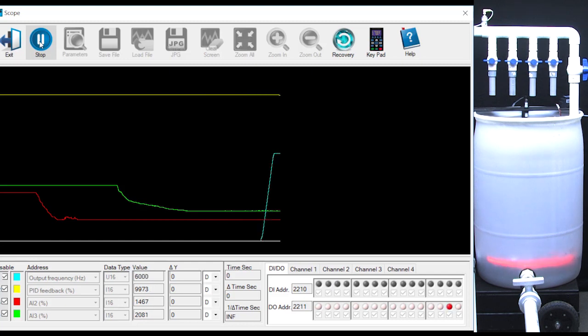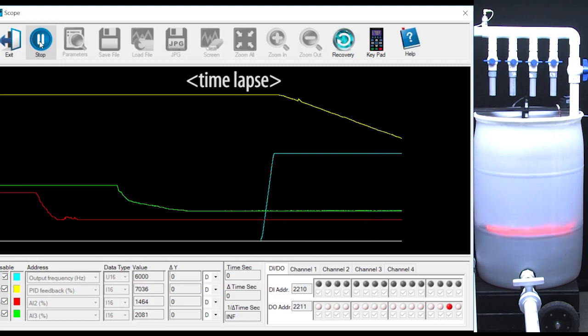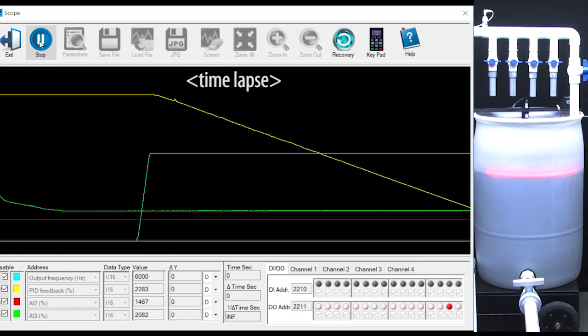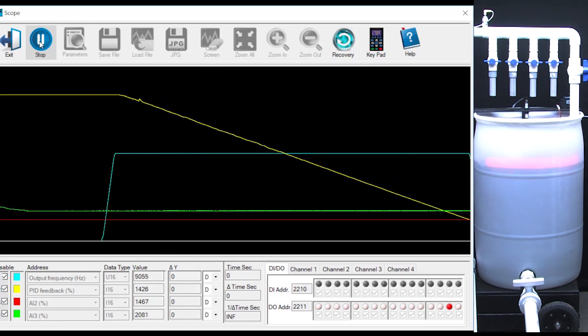PID sees the tank is empty and cranks up the blue drive frequency to try and fill the tank. We see the yellow sensor feedback falling. Remember it falls as the water level rises in a reverse acting system. And when sleep mode sees it cross the red sleep threshold we set, the motor turns off.